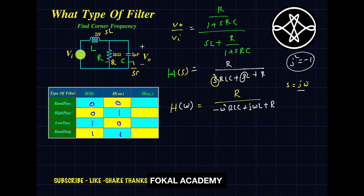Let me explain how to understand this table. For band pass filter, at ω=0 the transmission is 0, and at infinity it is 0. For high pass filter, at ω=0 it gives 0, and at infinity it gets 1. Similarly for low pass and band stop. At ω=0 and ω=∞, these are the corresponding values — 0,0 / 0,1 / 1,0 / 1,1. At ωc, the magnitude is 1/√2 for the respective filter type.